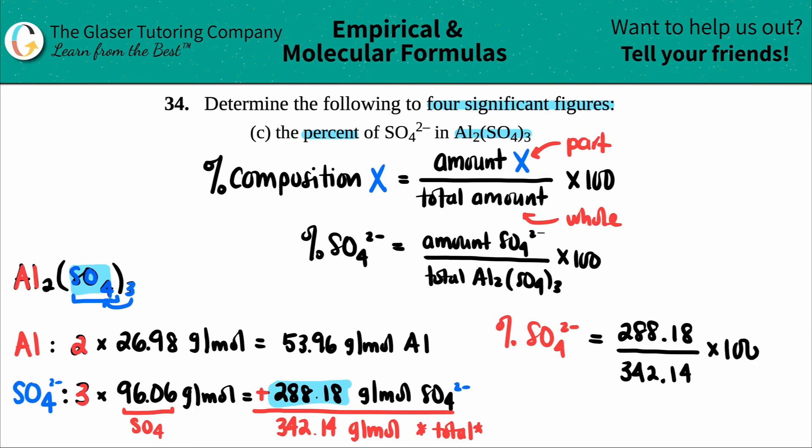And just like every percent, you multiply by 100. I don't put in any units when doing the math because it gets a little hairy. I make sure I have the right units, then plug in the numbers. So 288.18 divided by 342.14 times 100. The total percent of the sulfate ion to four sig figs is 84.23 percent, and that's it.